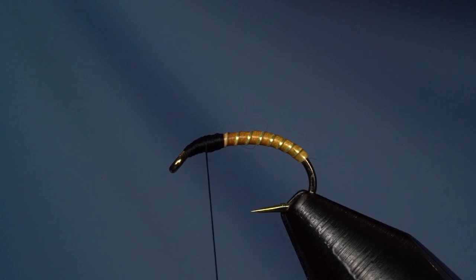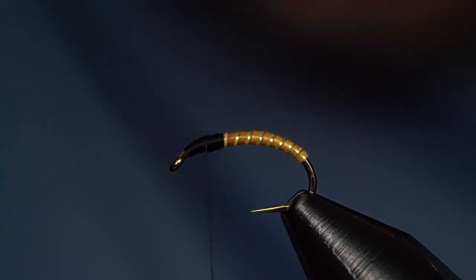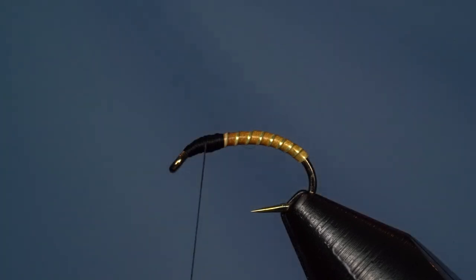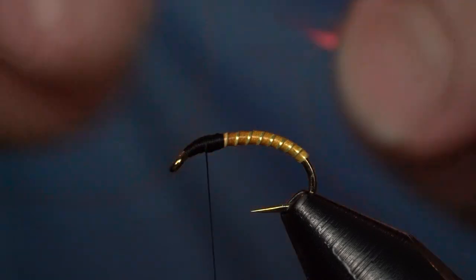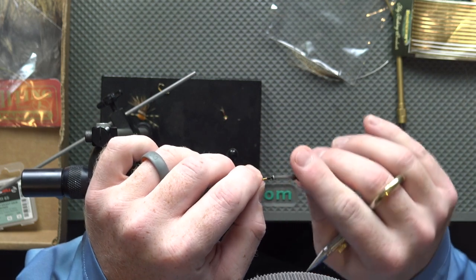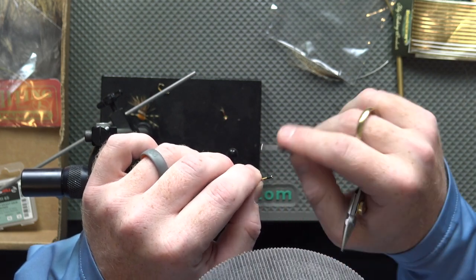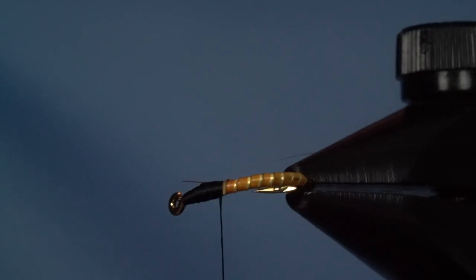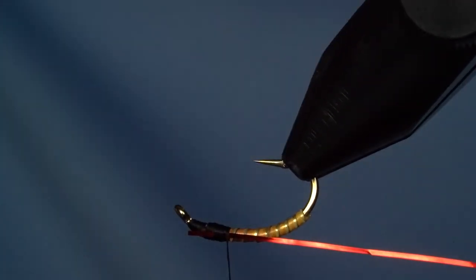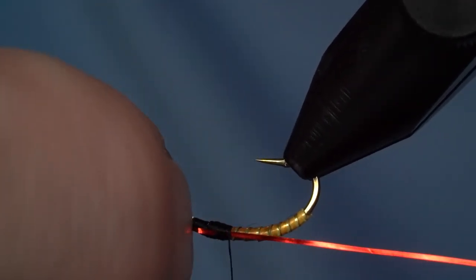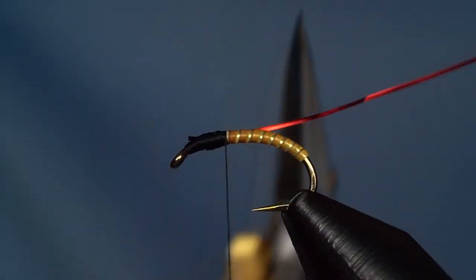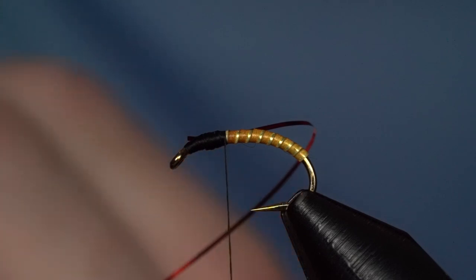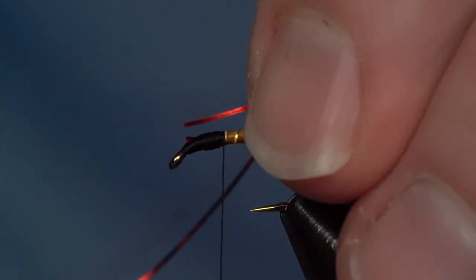The reason for the name Red Cheeked Buzzer is because of the red Flashabou. It's a good imitation for a gill on either side of this fly. We'll tie it in on my side and secure it down. I usually tie it long enough so it goes up to the eye but not past it, so I don't have to trim anything. I can just cover that up and mirror that on the opposite side.